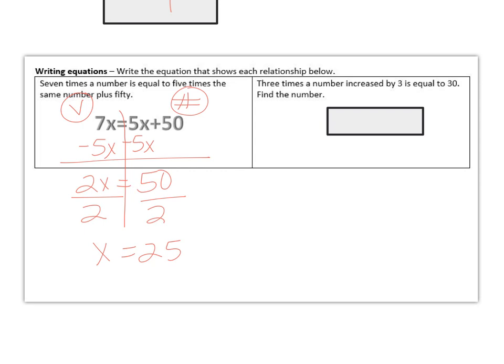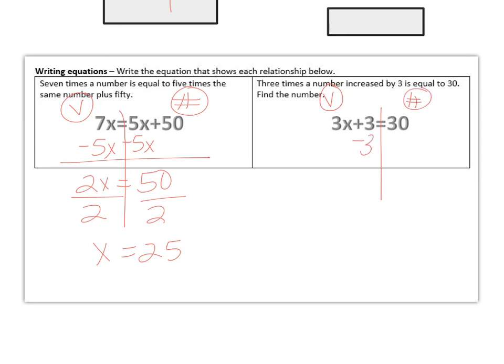On the second problem, the equation would be 3 times the number increased by 3. So that means 3 times the number plus 3 is equal to 30. So that's what your equation would look like. Again, figure out which side you want what. Variables here, numbers here, minus 3 on both sides, giving you 3x equals 27. And then you would divide by 3 to give you x equals 9.